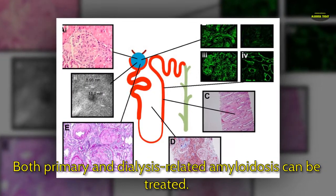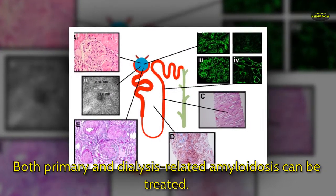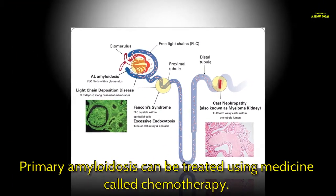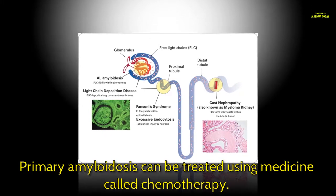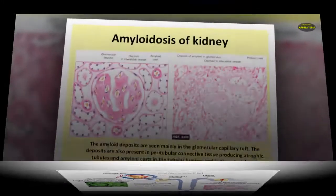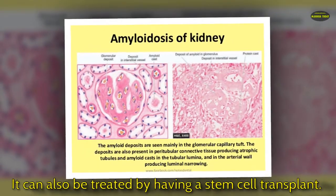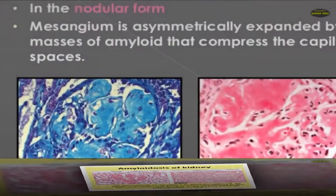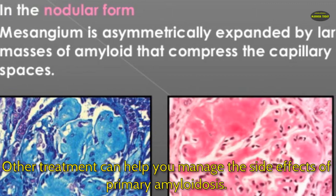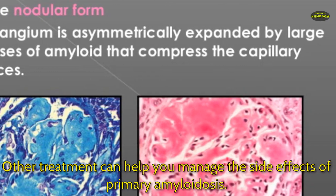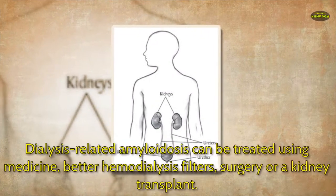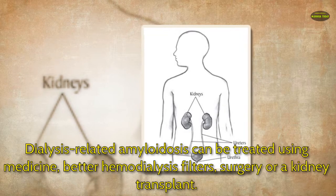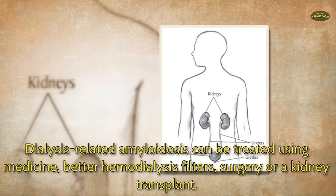Both primary and dialysis-related amyloidosis can be treated. Primary amyloidosis can be treated using medicine called chemotherapy, and other treatments can help manage the side effects. Dialysis-related amyloidosis can be treated using better hemodialysis filters, medicine, surgery, or a kidney transplant.